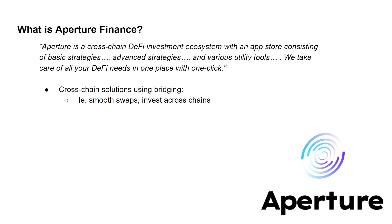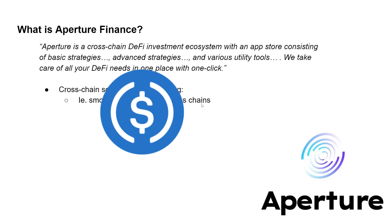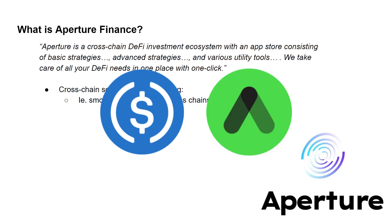What do they mean by cross-chain? Cross-chain solutions they're going to be implementing will use bridging — for example, being able to swap between tokens and coins on different blockchains very smoothly, and also to invest across different blockchains. For example, if I have the ERC-20 version of USDC and I want to put that into Anchor, which is on the Terra blockchain, I can't typically do that, but using Aperture Finance, that will be possible in the future.